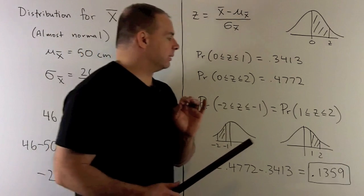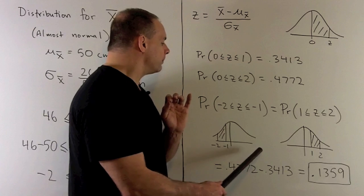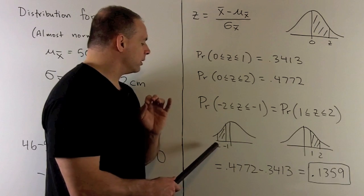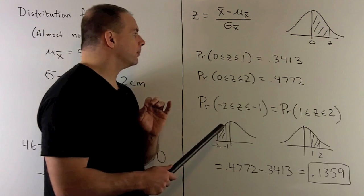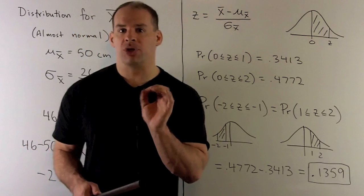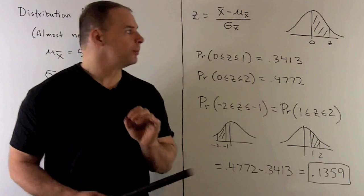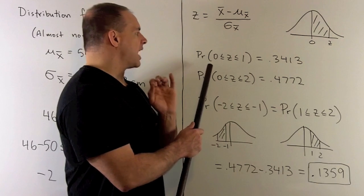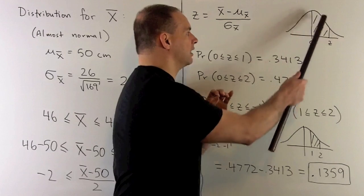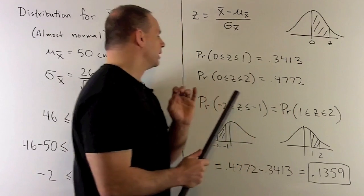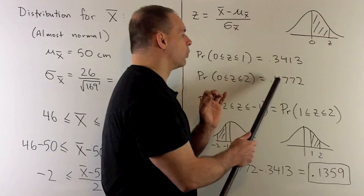If we draw our picture of the standard normal distribution, I'm interested in the area under the curve between minus 2 and minus 1. That'll give us our probability. To get that, we're going to look numbers up in the table. It's the probability of z between 0 and 1, from 0 to 1 here, we take the area, 0.3413. The probability of z between 0 and 2 is equal to 0.4772.